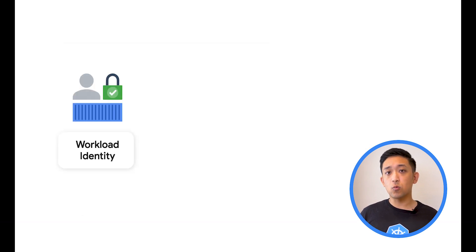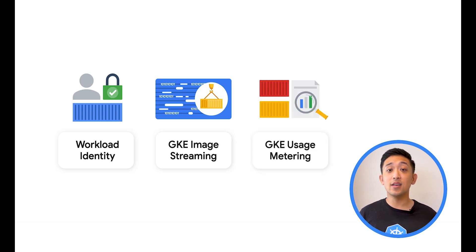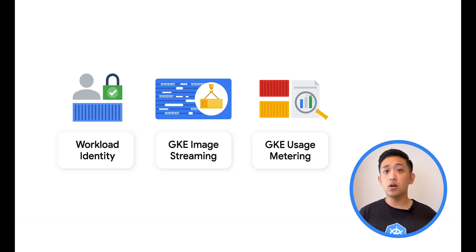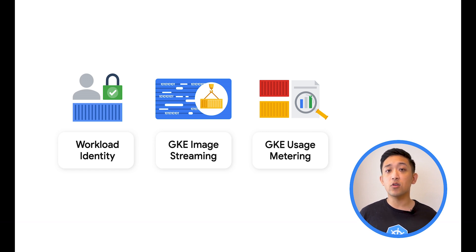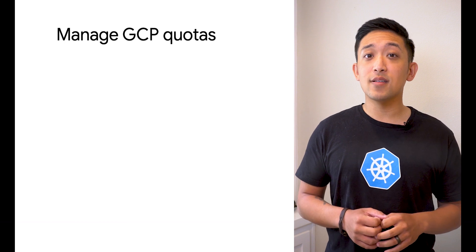Once the foundation of your workloads infrastructure has been settled, you can then move on to other best practices or optimizations, including granting granular GCP permissions to workloads with workload identity, reducing startup latency for pods using GKE image streaming, or implementing GKE usage metering to understand how efficiently teams run their workloads in your cluster. And finally, we wrap with GCP quotas.